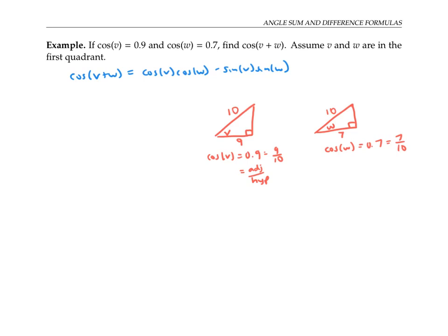Now the Pythagorean theorem lets me compute the length of the unlabeled side. So this one is going to be the square root of 10 squared minus 9 squared, that's going to be the square root of 19. And here I have the square root of 10 squared minus 7 squared, so that's the square root of 51. I can now find the sine of v as the opposite over the hypotenuse, so that's the square root of 19 over 10. And the sine of w will be the square root of 51 over 10. Because we're assuming v and w are in the first quadrant, we know the values of sine need to be positive, so we don't need to jimmy around with positive or negative signs in our answers. We can just leave them as is.